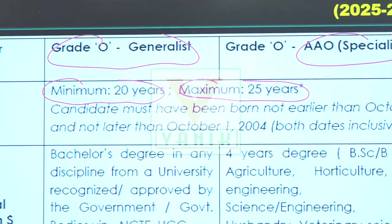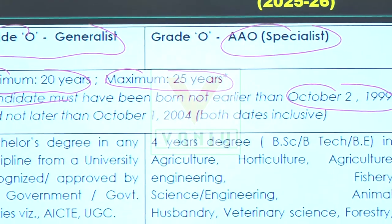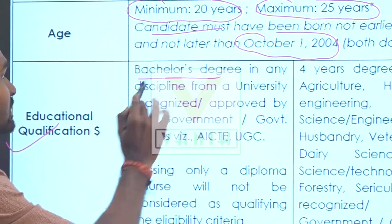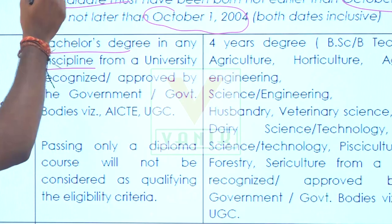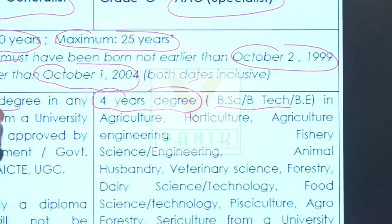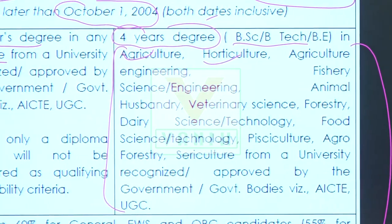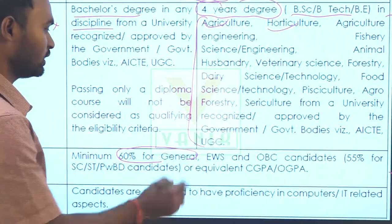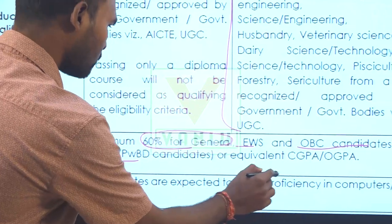The age cut-off is over 6 years, and October 1st, 2024 is the reference date for age eligibility. For educational qualification, a bachelor's degree in any discipline from any recognized university is required for the generalist post — whether BA, MA, BSc, or similar. For the specialist post, a four-year degree such as BSc, BTech, or BE in a relevant subject is required. Minimum passing percentage is 60% for general and EWS candidates, and 55% for SC/ST and PwD candidates. Computer proficiency is also required.